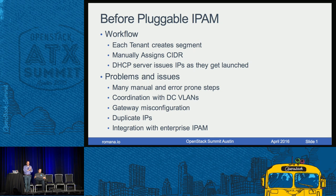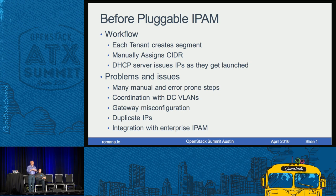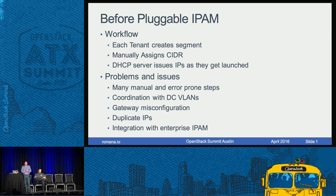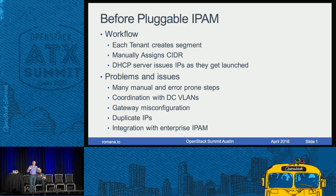Let's start with a little history and context of what OpenStack was like before pluggable IPAM. When you started a machine, you'd pick a network, add a segment, pick the CIDR, specify a gateway, and launch. That workflow was complicated — fine for a sandbox, but once you needed access to the public internet or existing data center VLANs or IP addresses, it got disrupted. You had to coordinate with your data center for VLAN IDs, IP addresses, and so forth. There were lots of issues and limitations with how IP addresses were assigned in Neutron, and this problem was deferred time and again because it turned out to be much bigger than people had hoped.